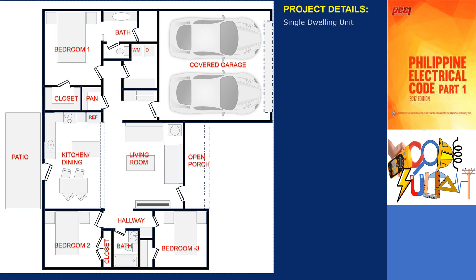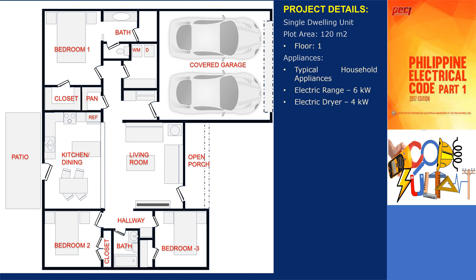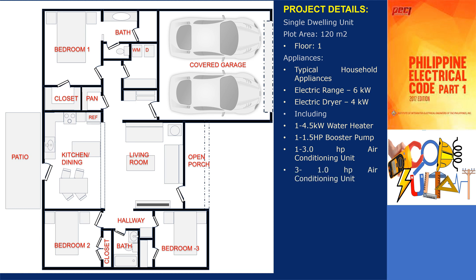The single-story family dwelling has a plot area of 120 square meters. In addition to typical household appliances, it has a 6 kW range, a 4 kW clothes dryer, a 4.5 kW water heater, a 1.5 hp booster pump, a 3 hp air conditioning unit, and 3 one-hp room air conditioning units.